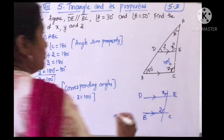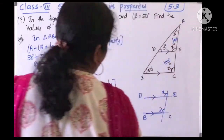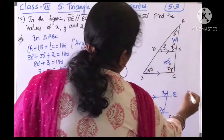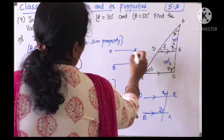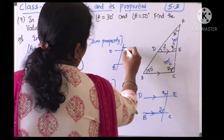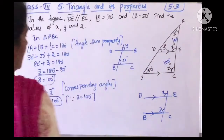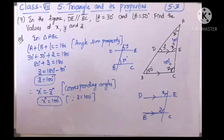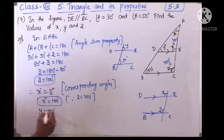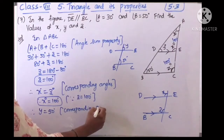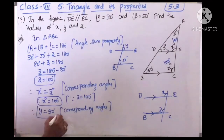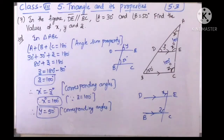X is 100 degrees. For Y: BC is parallel to DE, and with the transversal, Y and 50 degrees (angle B) also form corresponding angles. Therefore Y equals 50 degrees. So finally, X equals 100, Y equals 50, and Z equals 100 degrees.